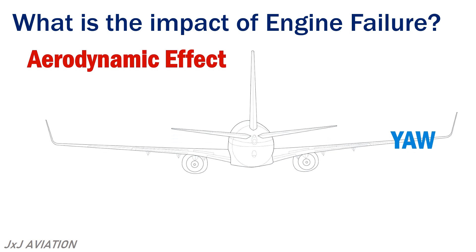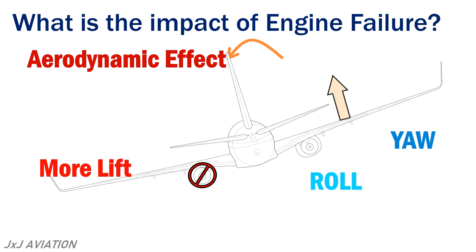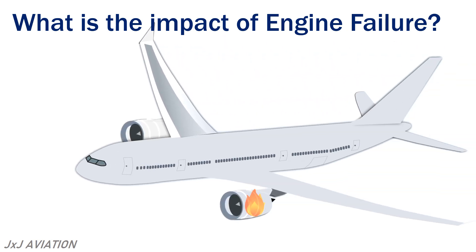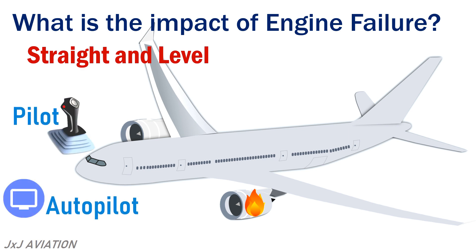Because of the yaw, the aircraft will also start to roll towards the failed engine side. This is because on the live engine side, more lift will be produced on that wing since it moves faster across the air. To ensure that the aircraft continues flying straight and level, the pilot or the autopilot have to give inputs to the rudder to counter the yaw and to the ailerons to counter the roll.